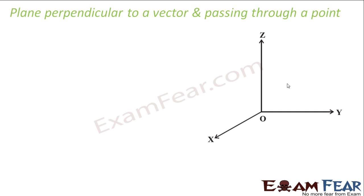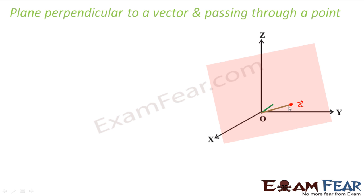Let's take the derivation. I have this plane. This is my perpendicular vector. This is my any point — two things are given. This is my point which it passes through, and this is my perpendicular vector, the normal vector. I have to find the equation. So let's take some general vector r.